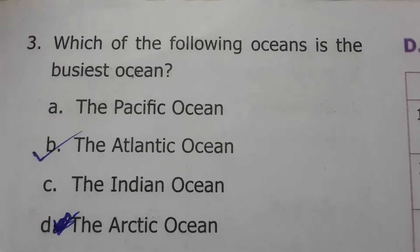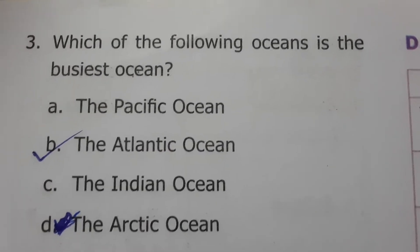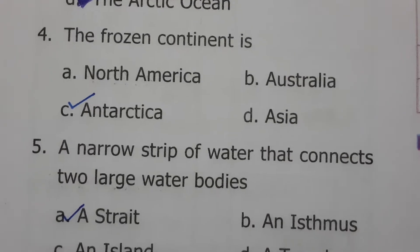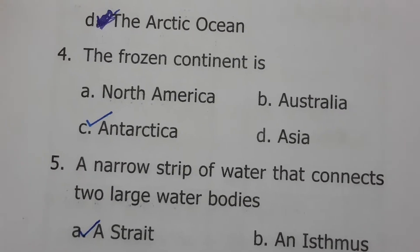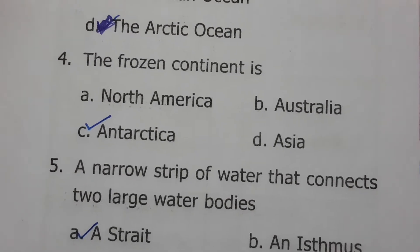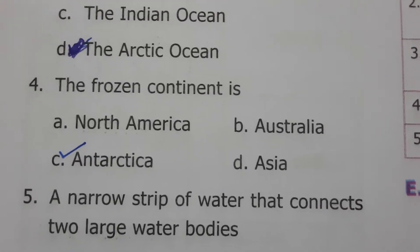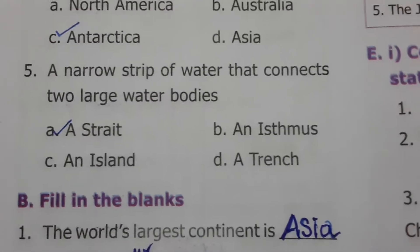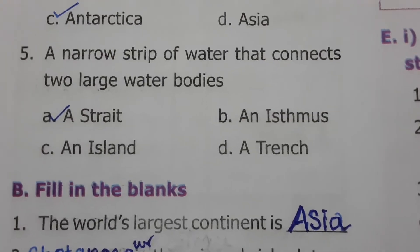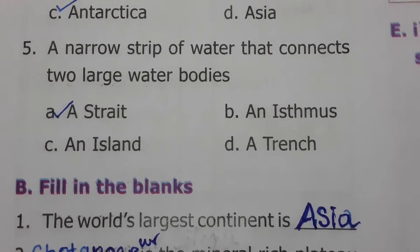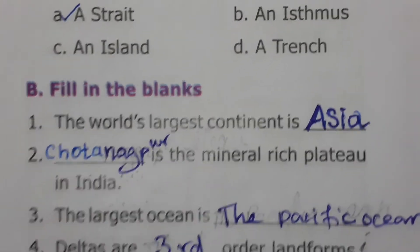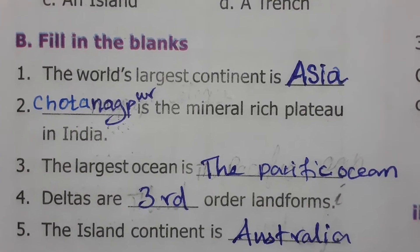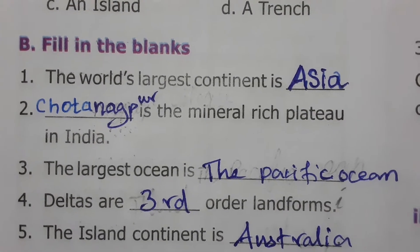The Atlantic Ocean is the busiest ocean. The frozen continent is Antarctica, because the entire landmass of Antarctica is covered by ice. A narrow strip of water that connects two large water bodies is called a strait.